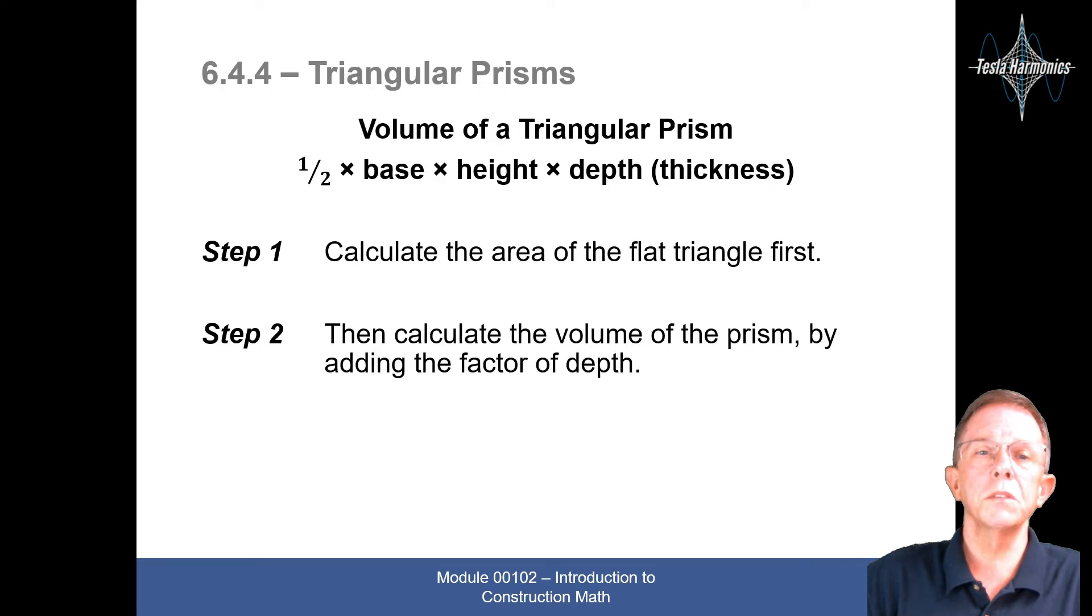Triangular prisms. The volume of a triangular prism is half times base times height times depth or the thickness. Step one, calculate the area of the flat triangle first. Step two, then calculate the volume of the prism by adding the factor of depth.